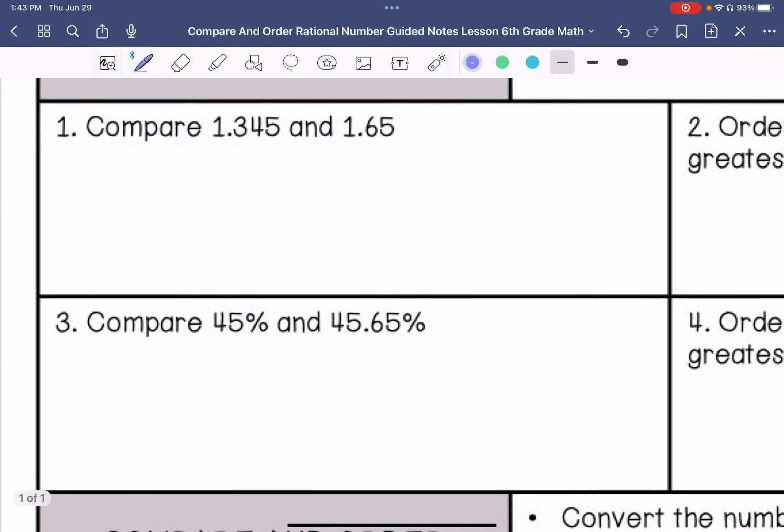So if we are doing number one, we would line them up. I'm going to put a placeholder of zero, so one-point-six-five, because six is greater than three, is greater than one-point-three-four-five.